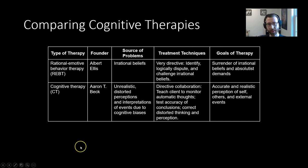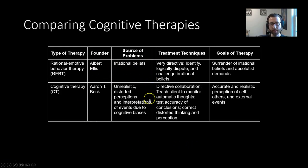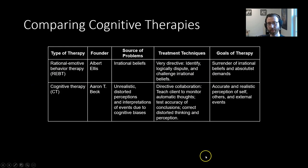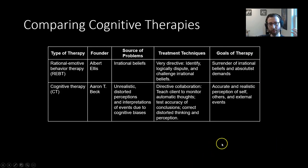Rational Emotive Behavior Therapy and cognitive therapy might seem pretty similar, and they are in many ways — both focus on rational beliefs and distorted perceptions. The biggest difference is in treatment technique. REBT is very directive: the therapist identifies, logically disputes, and challenges irrational beliefs. Cognitive therapy uses directive collaboration, working together to test assumptions and correct thinking. The goal of REBT is surrender of irrational beliefs and absolutist demands, whereas cognitive therapy aims for accurate and realistic perception of yourself, others, and external events.